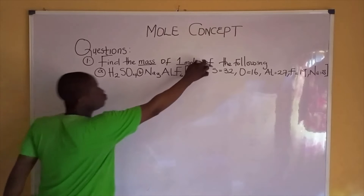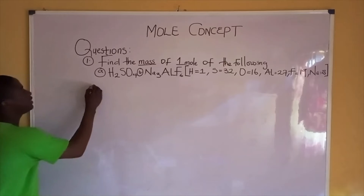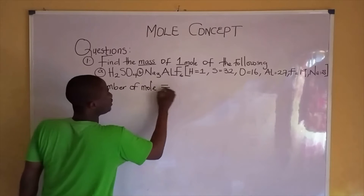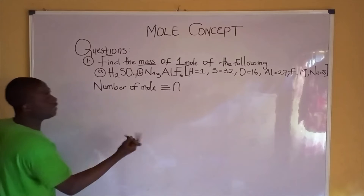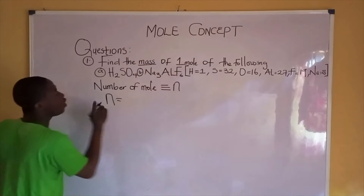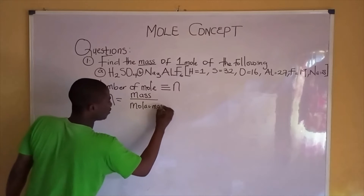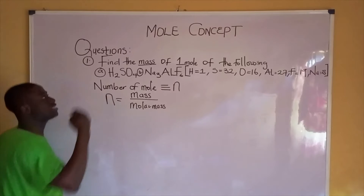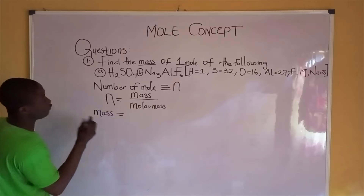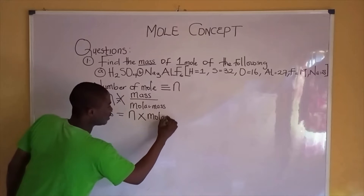They are asking us to find the mass, but they gave us the moles of the compounds. This brings us to understand the concept of a formula. Numbers of moles, represented with the symbol N, equals mass over molar mass. Since the question is asking us to get mass, we make mass the subject of the formula. When cross-multiplying, we get: mass equals numbers of moles times molar mass.